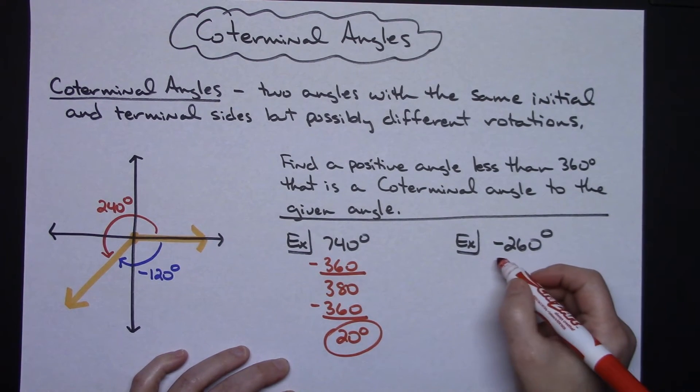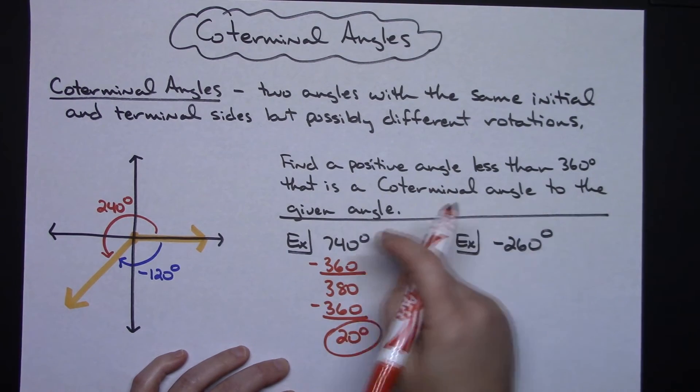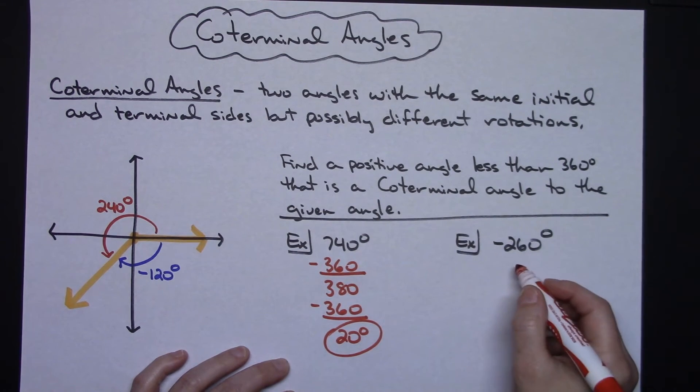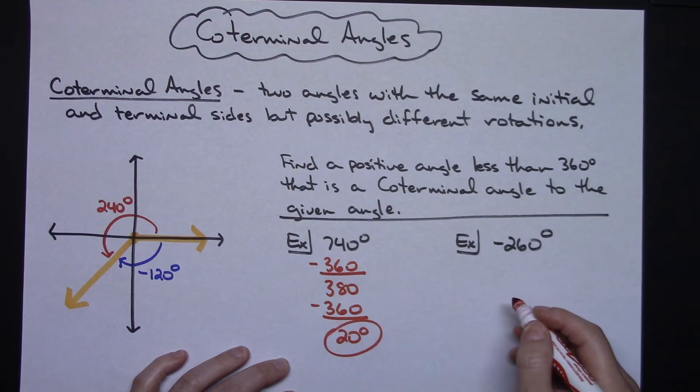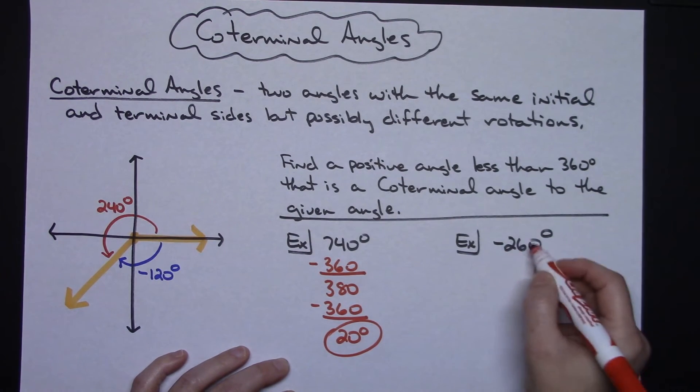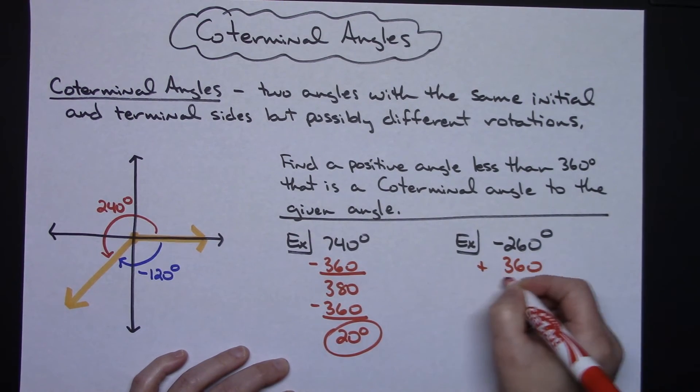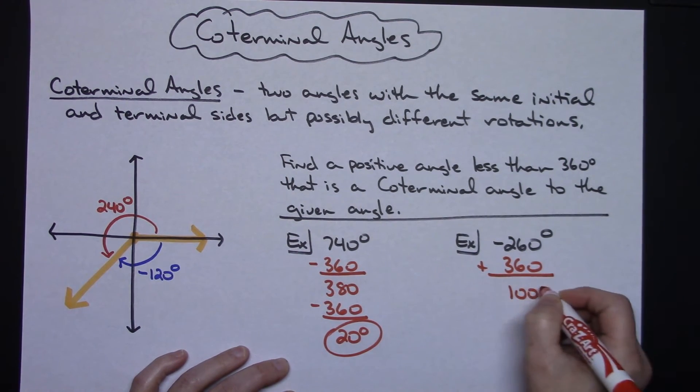On the second example I'm given a negative 360 degrees. Still I've got to have that same initial side and same terminal side. So on this one instead of subtracting 360 I'm going to need to add 360 degrees. It is less than one time around the circle, so that means I'm only going to have to do this once.